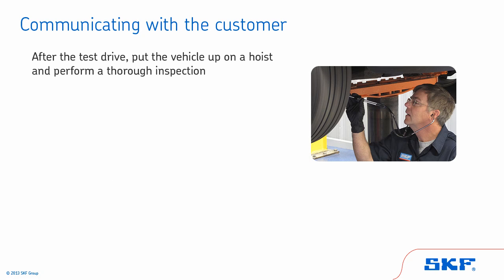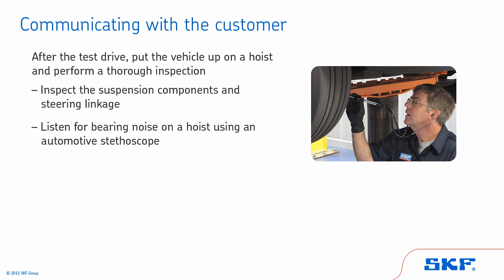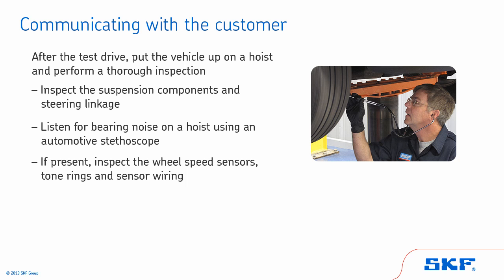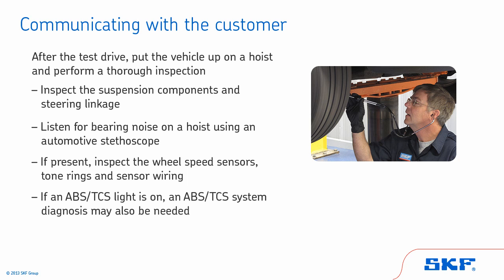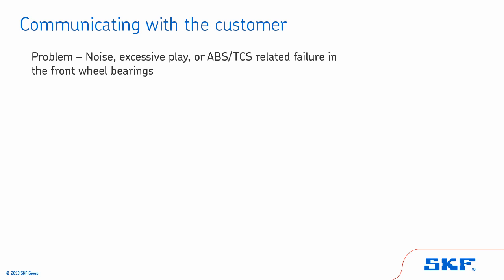After the test drive, put the vehicle up on a hoist and perform a thorough inspection. Carefully inspect the suspension components and steering linkage. It may be necessary to listen for bearing noise on the hoist using an automotive stethoscope. If present, inspect the wheel speed sensors, tone rings, and sensor wiring. If an ABS and/or TCS light is on, a system diagnosis may also be needed. If the problem turns out to be noise, excessive play, or ABS/TCS-related failure in the front wheel bearings, the solution is to replace the hub bearing or tapered bearing and seal. When a seal wears out, it usually leads to bearing failure, so the symptoms of seal failure are often the same as they are for bearings.